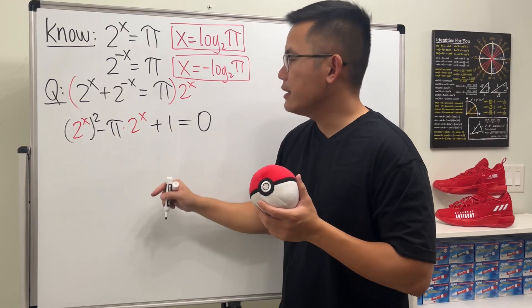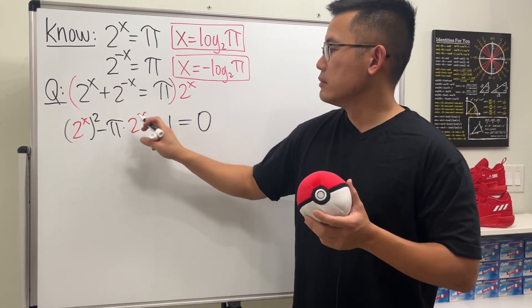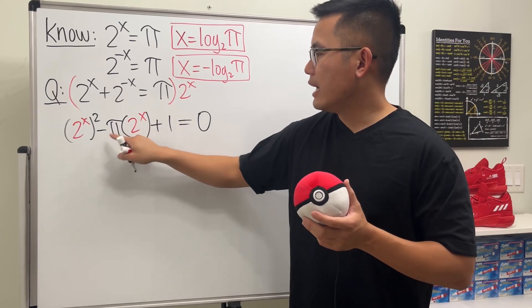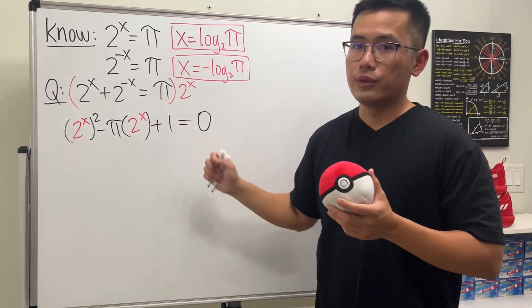And then that will give us 0 on the right-hand side. The reason we want to do this is now we have an equation. It's actually quadratic, but in terms of 2 to the x. So you see, we have 2 to the x and then square, and then this is 2 to the x to the first, and it has a coefficient of that.